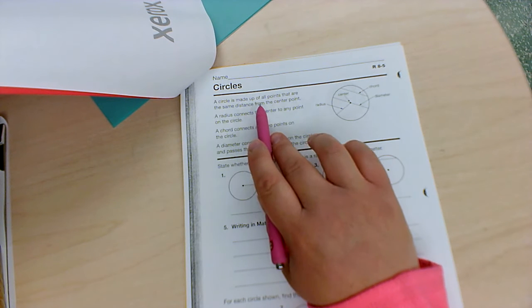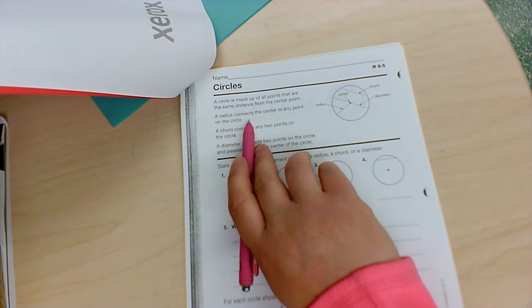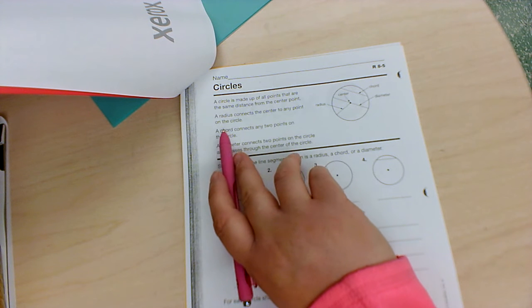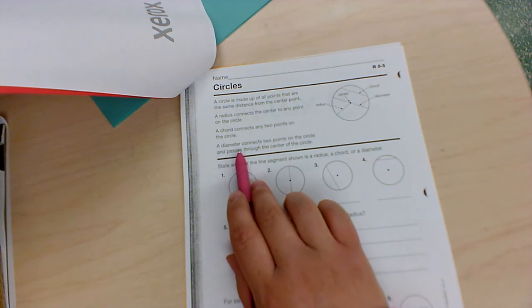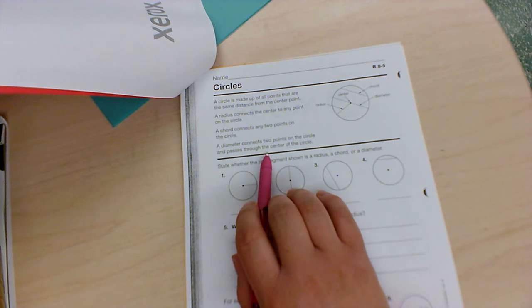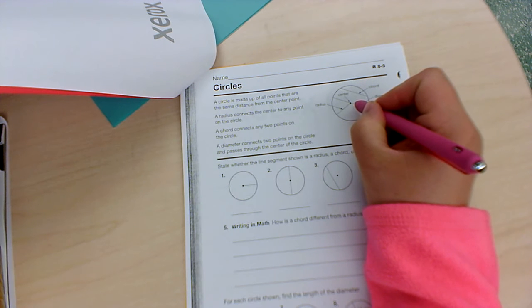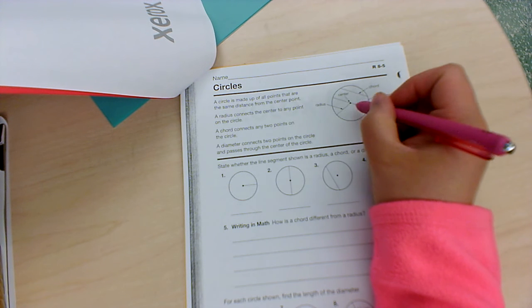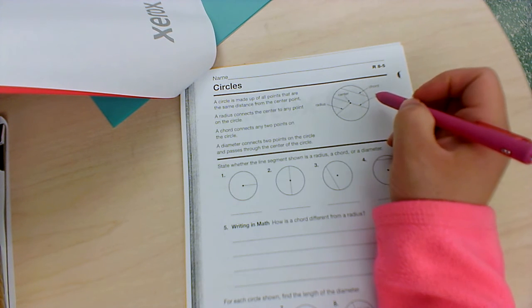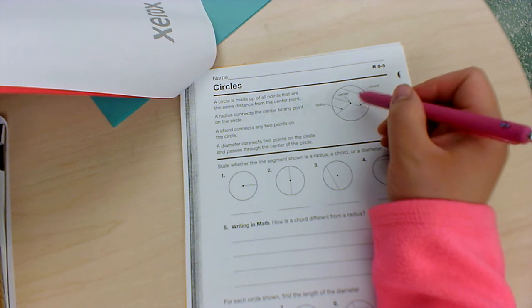Circles: A circle is made up of all points that are the same distance from the center point. A radius connects the center to any point on the circle. A chord connects any two points on the circle. A diameter connects two points on the circle that passes through the center. So here is the center, radius goes halfway, diameter is the whole way, and a chord does not need to go through the center.